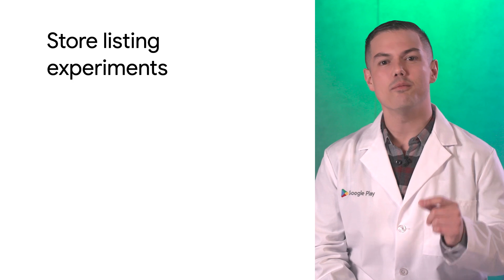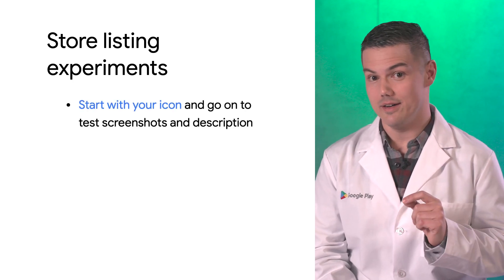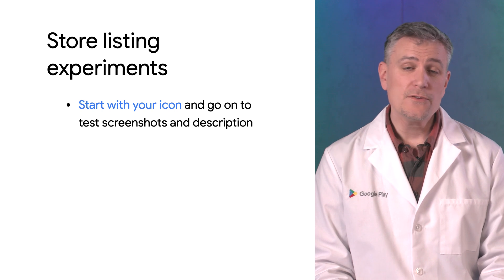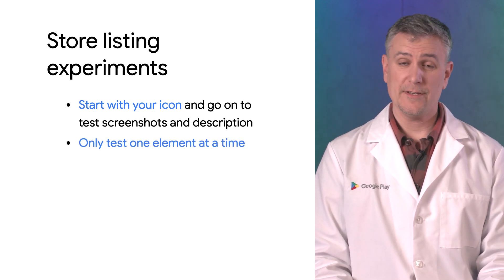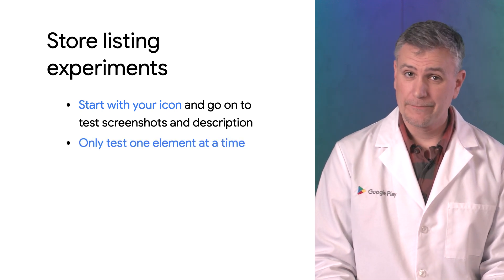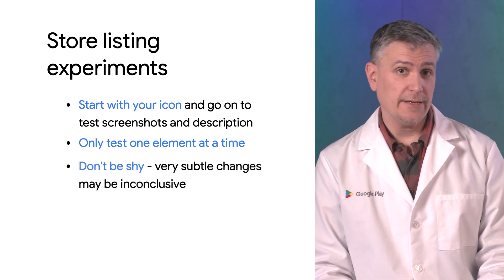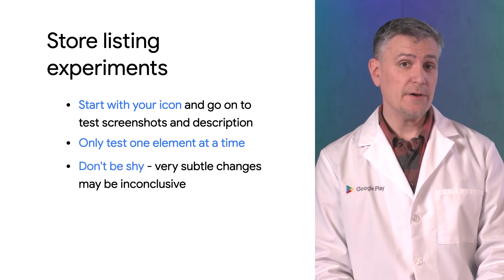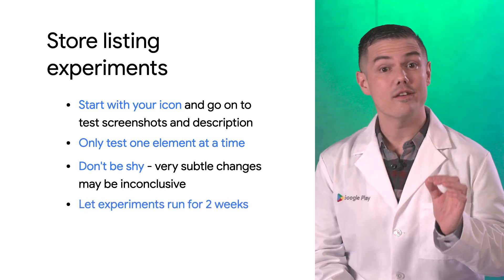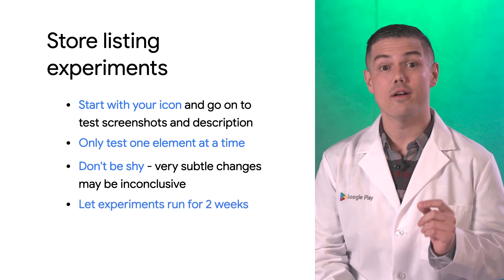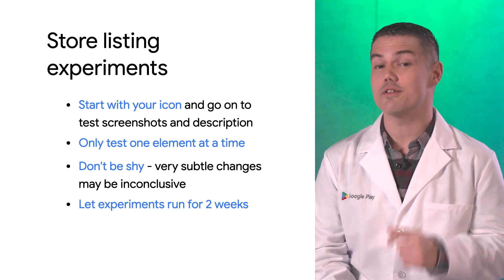I would try starting with your most important asset, your app icon. But no matter where you start, I'd recommend you only test one element at a time. You may be tempted to play it safe, but I'd encourage you not to be shy. You'll learn the most by testing assets with distinct differences. And let your experiments run two weeks or more to make sure you capture enough data.